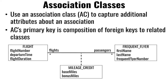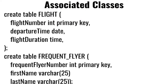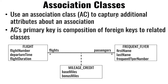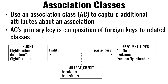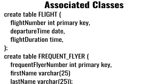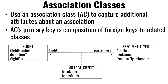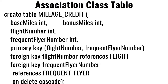This is a newer way to represent it in the latest UML — before it was just one-to-many and one-to-many, but this is a more appropriate way to capture it. Here's the implementation: you have the flight class as a table with flight number, departure, and flight duration. You have the frequent flyer table with first name and last name. The association class table has two foreign keys — one referring to the flight, the other referring to the frequent flyer.